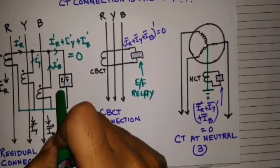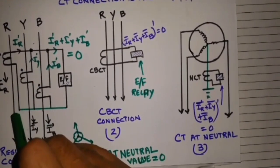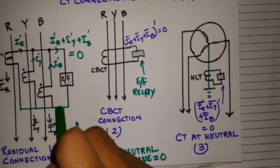So their summation will be zero during the normal condition. So when normal current is flowing, the relay will not pick up.